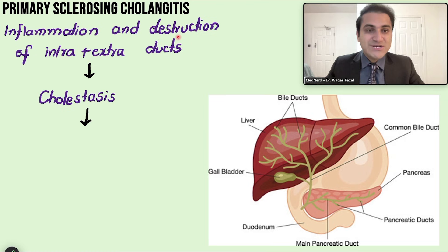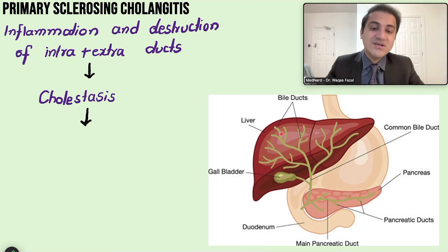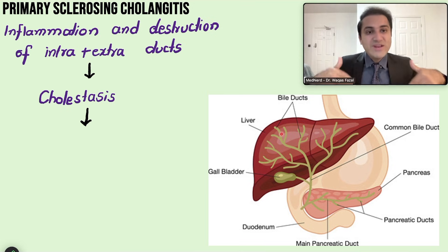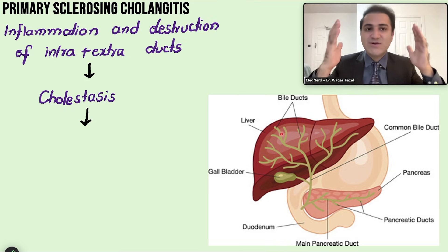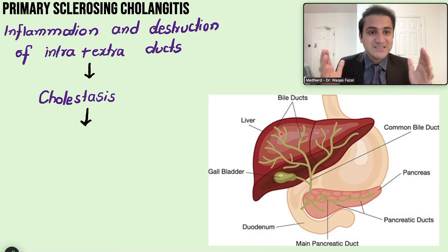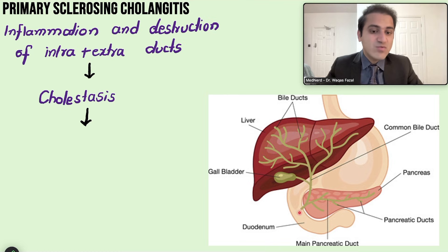In PSC, inflammation and destruction of both intra- and extrahepatic bile ducts impairs drainage of bile from the liver to the intestines. When bile builds up in the blood, it results in fatigue and pruritus. Bile also carries toxins to the intestines for excretion in feces.